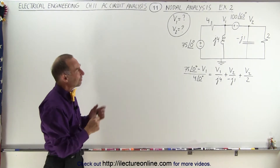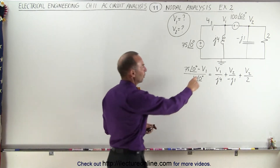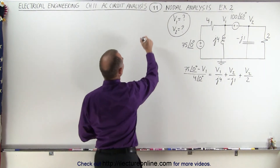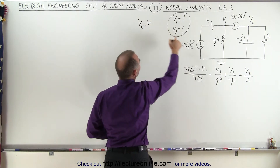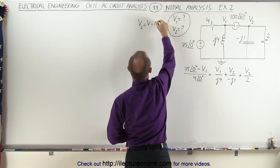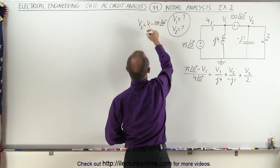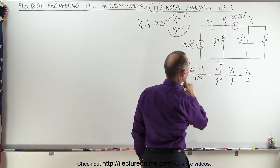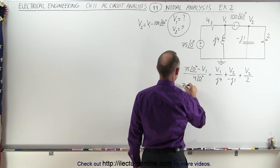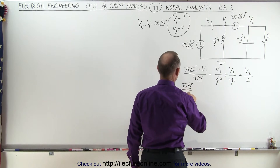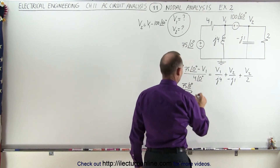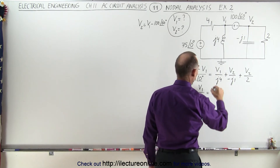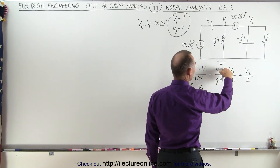Now the next thing we want to do is have some relationship between V1 and V2. Obviously we don't want two unknowns in the same equation, so we want to replace the V2s by something in terms of V1. We can see here that V2 is equal to V1 minus the voltage over here, which is minus 100 volts at a phase angle of 60 degrees. So what we can do is replace each of the V2s by this equivalent, and we'll put that in here.